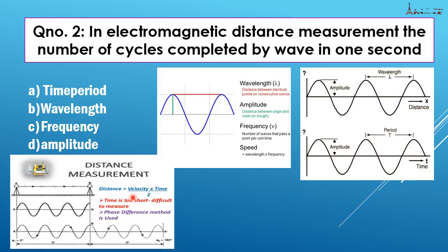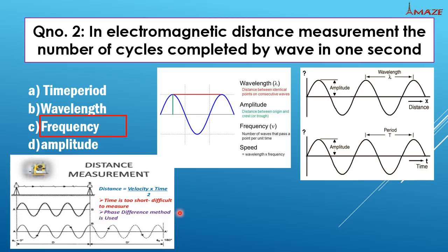The wave travels to the reflector and back, so we divide by 2 to get the one-way distance. Since it is difficult to note time precisely, we instead propagate the wave and note the phase difference. That is why there are two methods of distance measurement using phase difference. These are the two basic concepts.